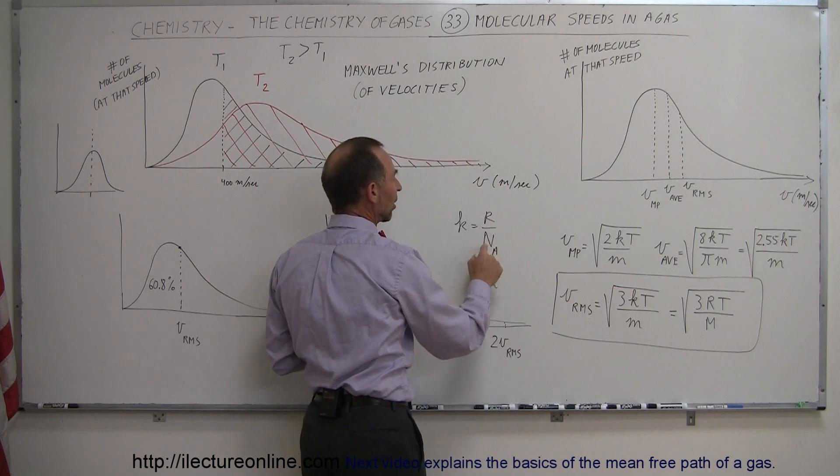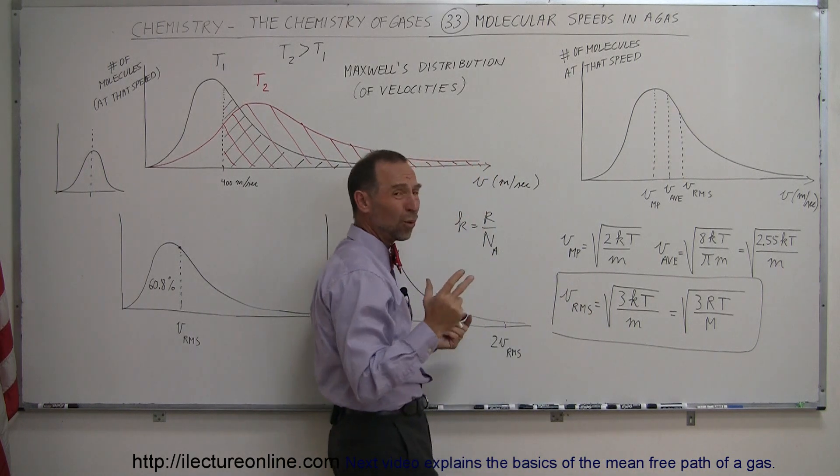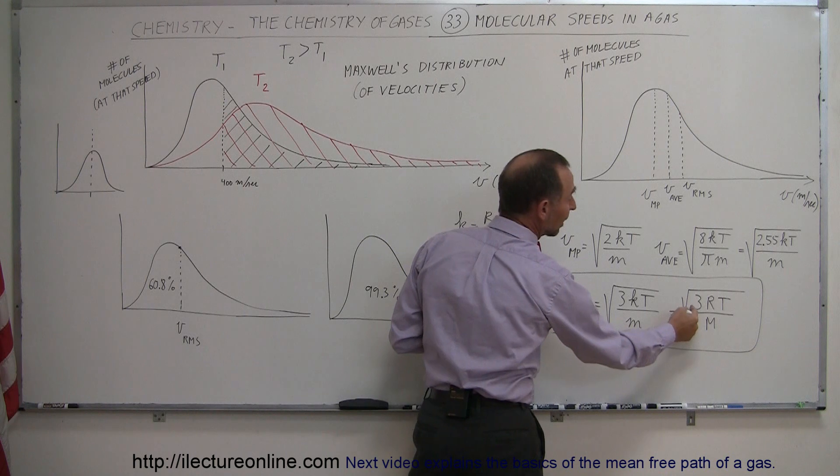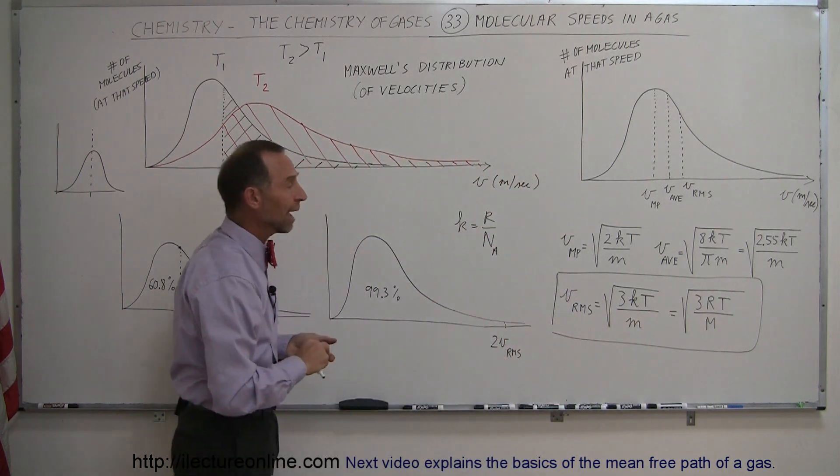K again is the gas constant divided by Avogadro's number, M is the mass of a single molecule, or it's probably easier to say that it's the square root of 3RT over M, where R is the gas constant and M is the molar mass.